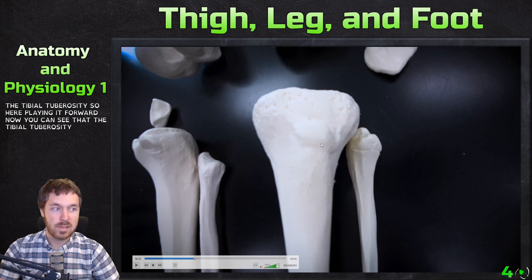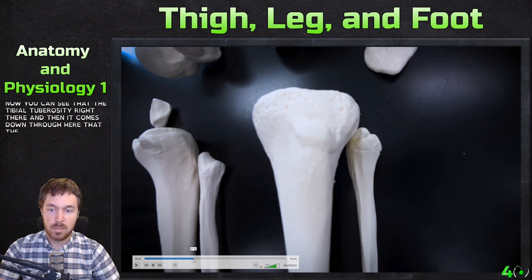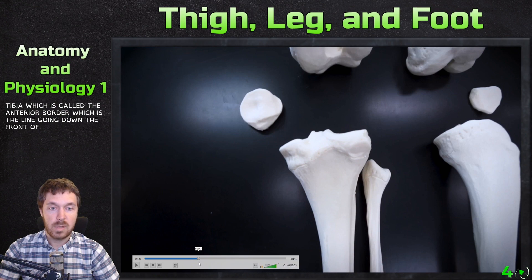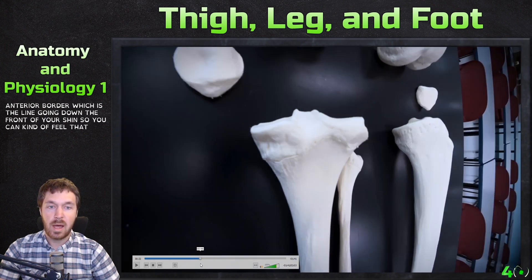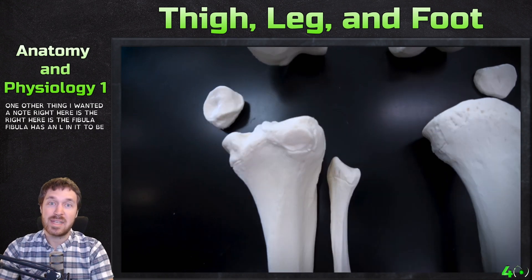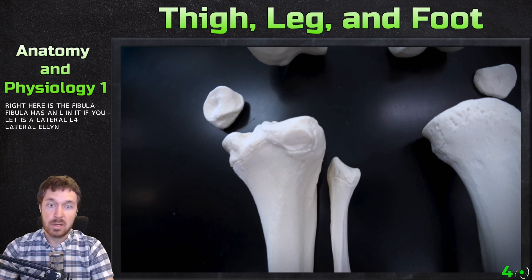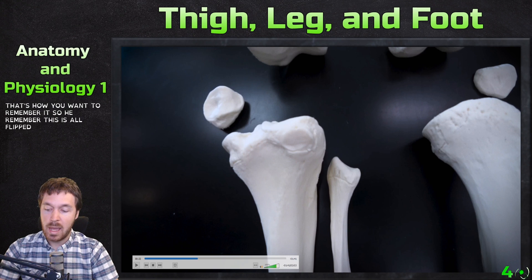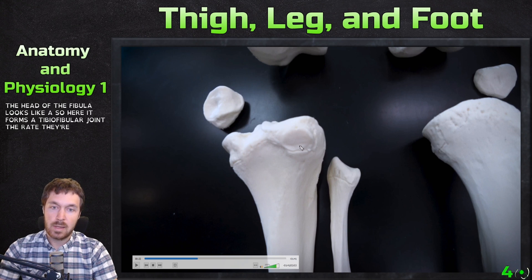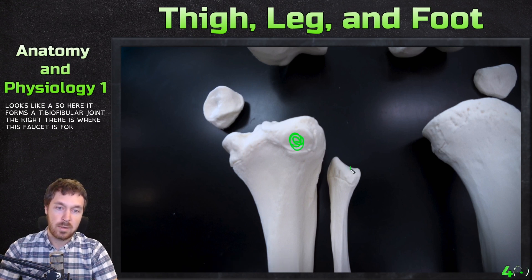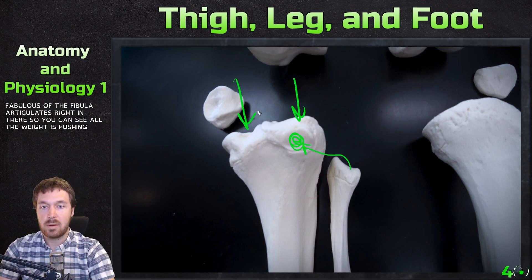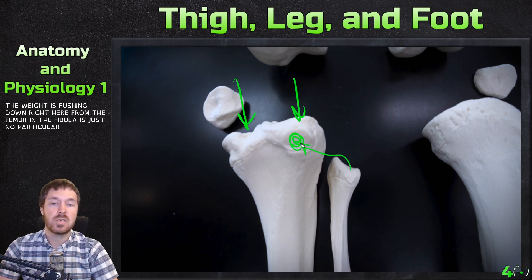Here you can see the tibial tuberosity, and running down from it is the anterior border — the bony line you can feel along the front of your shin. The fibula is lateral — remember: 'L' in fibula for lateral. The head of the fibula forms a tibiofibular joint with the tibia, and like the radius and ulna, an interosseous membrane connects the two bones.